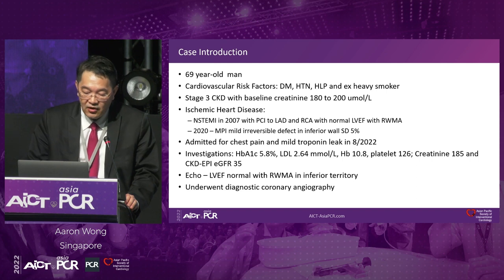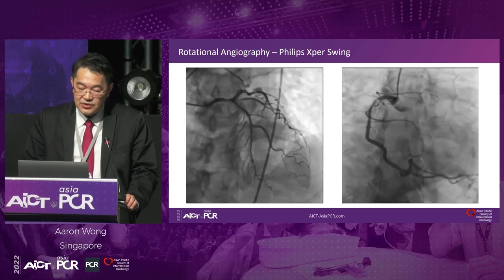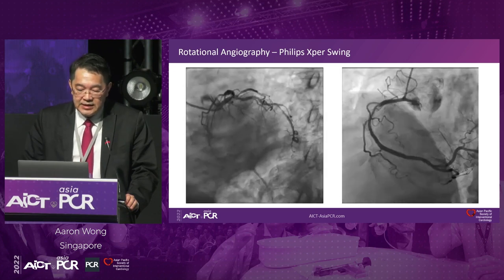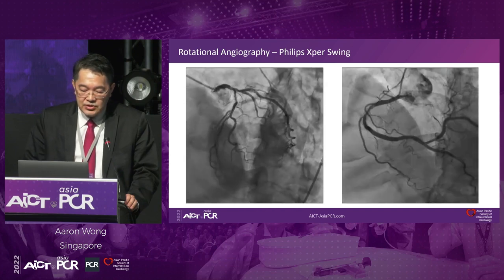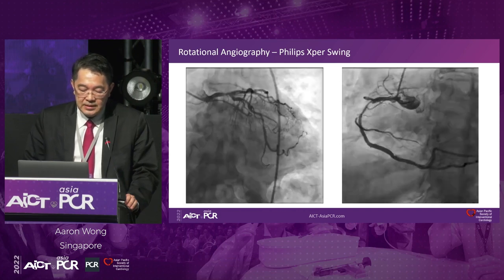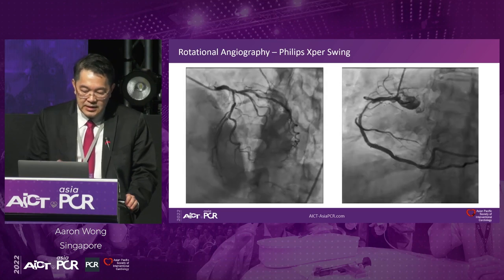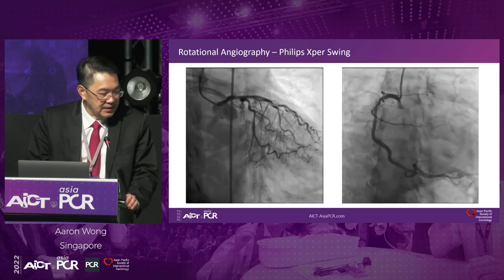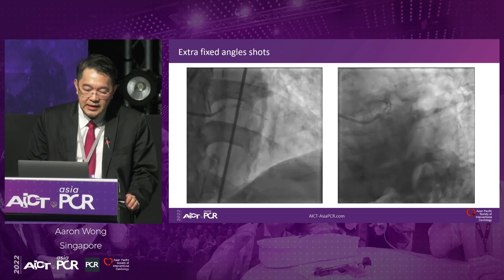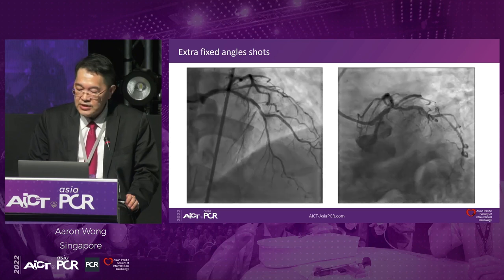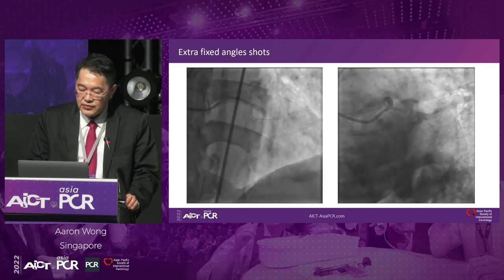He was admitted for chest pain and mild troponin leak in August this year. Investigations showed hemoglobin of 10.8, platelets 126, creatinine 185, and eGFR of 35. LVEF is normal with regional wall motion abnormality in the inferior territory. He underwent a diagnostic coronary angiogram. This is a rotational angiogram done using the Philips EasySwing, showing a distal left main lesion with a high OM branch lesion and some borderline in-stent lesions in the LAD.